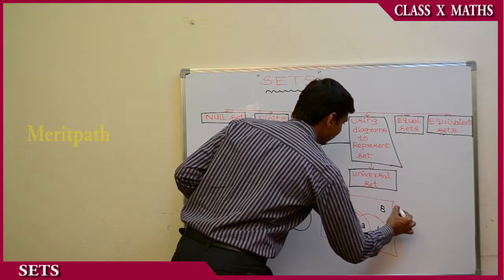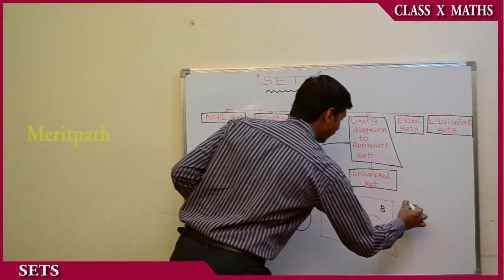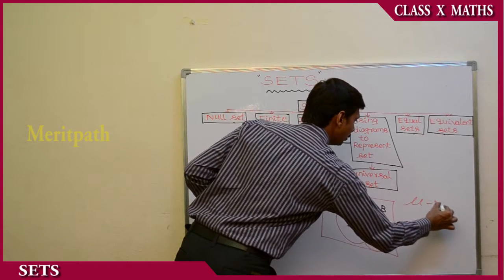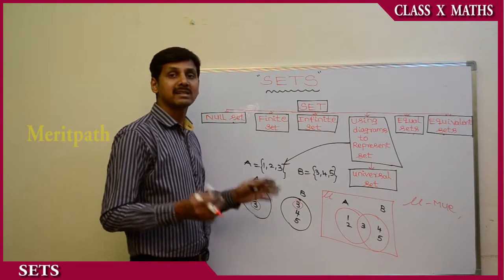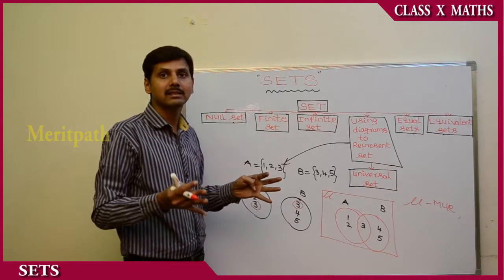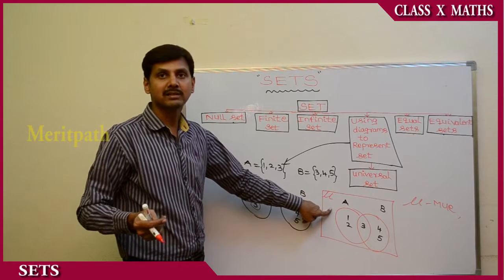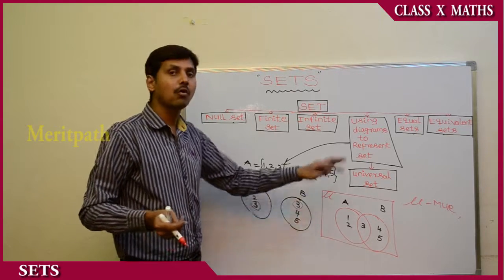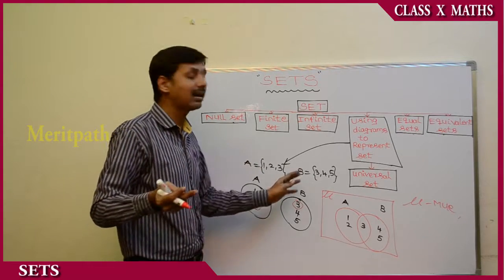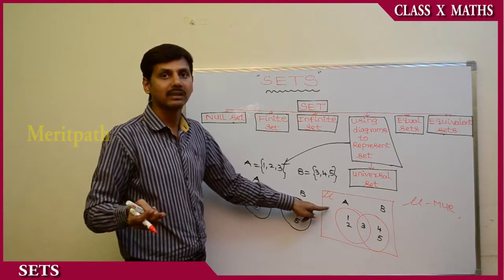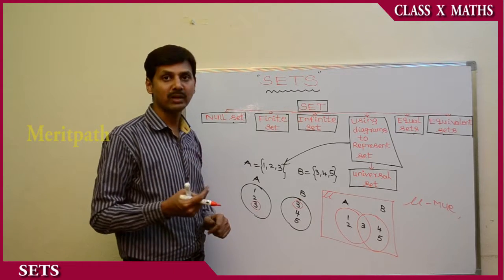The universal set is represented by the symbol mu (μ). The universal set is the set which consists of all the sets together. If we have sets A, B, C, D, we write all of them together inside this set, represented by μ.